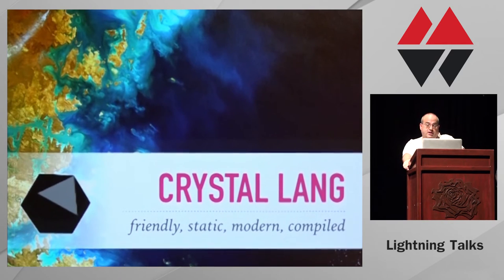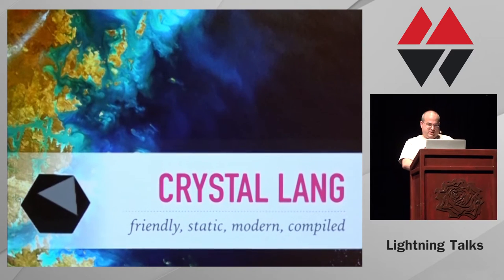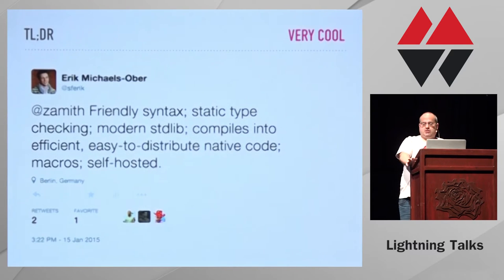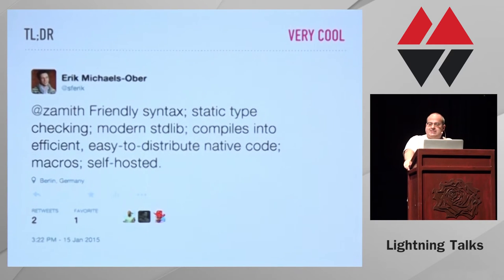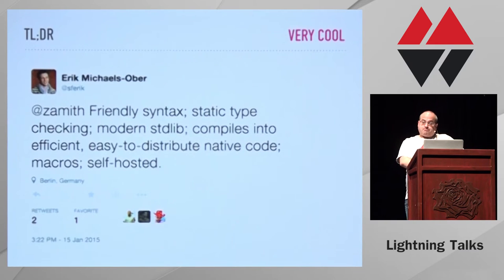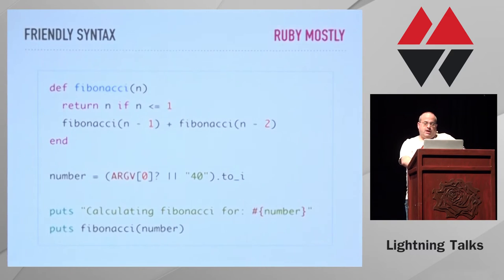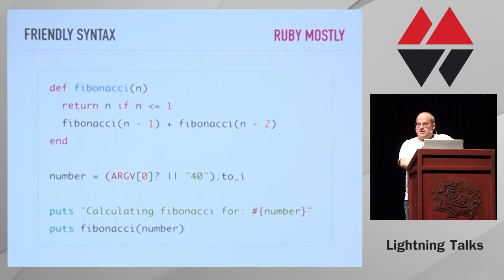I'm going to tell you about a language I'm really liking these days - it's the Crystal language. Somebody was asking on Twitter what this language is all about, and I like how the definition came together: friendly syntax, static type checking, modern standard library. Compiles into efficient, easy-to-distribute native code. Macro support, self-hosted. The syntax is very similar to Ruby - what you see there, you can read it, it's basically Ruby with one letter difference - a question mark next to argc.